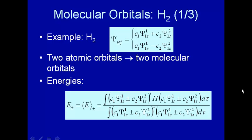Let's apply the linear combination of atomic orbitals to form molecular orbitals, the LCAO approach, to the simplest molecule we can find that has more than one electron, and that is the H2 molecule. For H2, let's take the 1s orbitals.